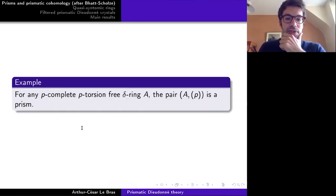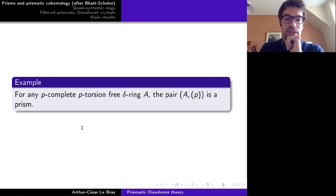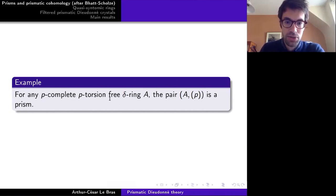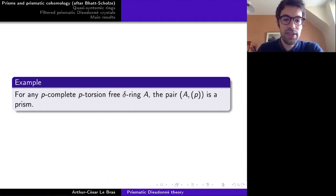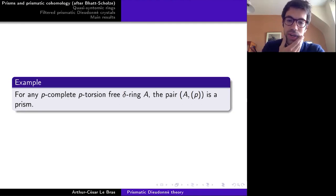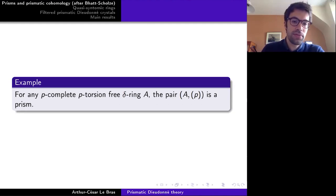Two examples of prisms: First, if A is a p-complete, p-torsion-free delta ring, then (A, (p)) is a prism — one checks that p is a non-zero divisor, the ring is p-complete, and delta(p) is always a unit. Second, a prism (A, I) is called perfect if the Frobenius phi is an isomorphism. The category of perfect prisms is equivalent to the category of integral perfectoid rings.